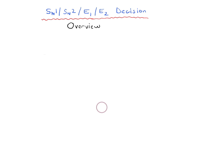In this video, we're going to start going through the decision-making process for how you decide whether a given reaction is going to go through SN1, SN2, E1, or E2.